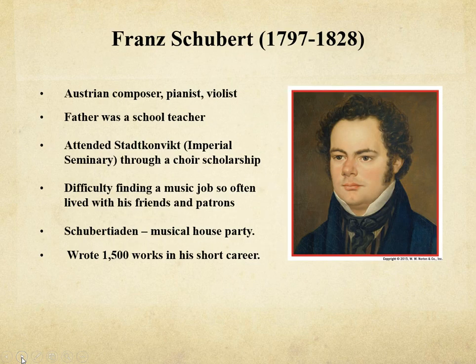Franz Schubert was born in Vienna and spent most of his short life there. He was an Austrian composer, pianist, violist, and he also sang and played the guitar. His father was a schoolteacher, and when he noticed his son had musical talent, he had him attend the Stadtkonvikt, the imperial seminary, through a choral scholarship. Schubert's circle of friends included Austrian artists, writers, and fellow musicians who organized a series of salon concerts called Schubertiads, which featured the young composer's newest works. Schubert achieved public recognition for his song Erlkönig while he was still a teenager. He had difficulty finding music jobs, so he often lived with his friends and patrons. He wrote over a thousand works in all genres in his short career, and he died sadly at the age of 31. Upon his request, he was buried near Beethoven.